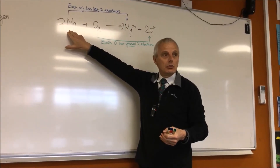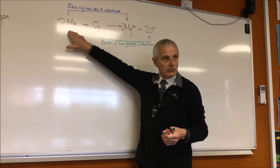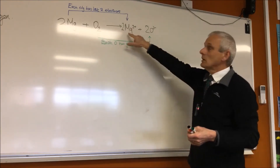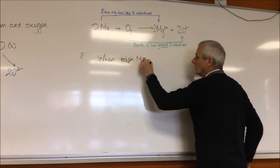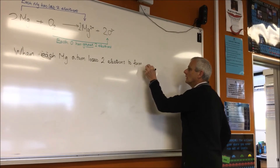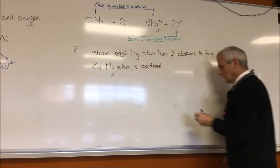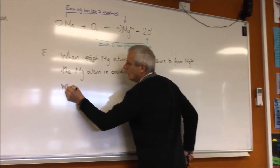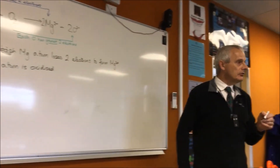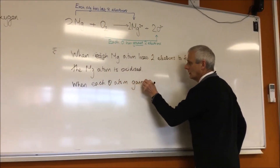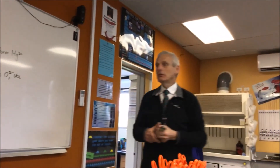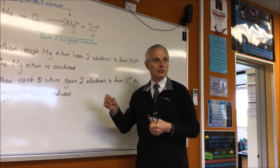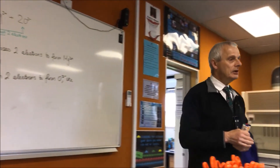When a species loses electrons, the process is known as oxidation. So we say that magnesium is being oxidized to Mg²⁺ because it's losing two electrons. Similarly, when oxygen gains two electrons, it is reduced. A redox reaction therefore involves a simultaneous occurrence of these two things, and electrons are being transferred from one species to another — a redox reaction involves transfer of electrons.